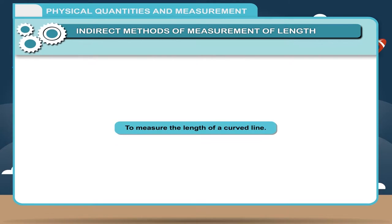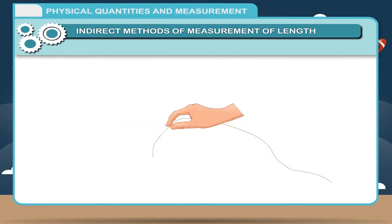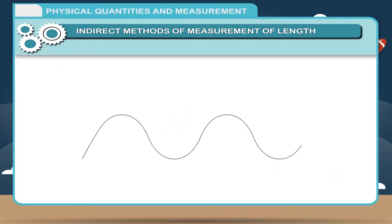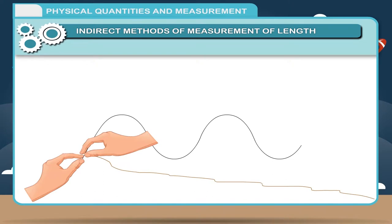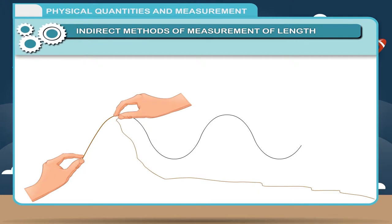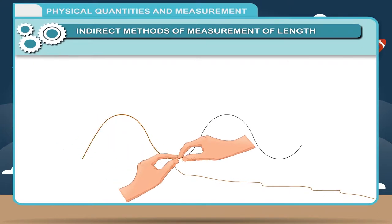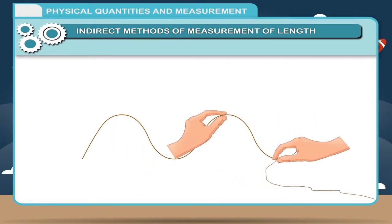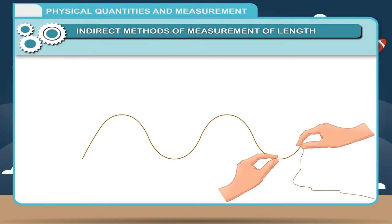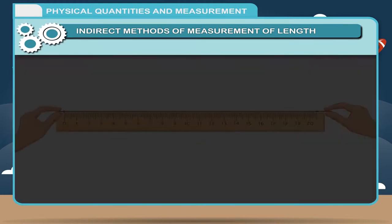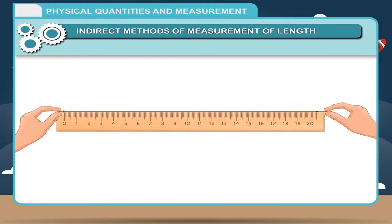Activity: To measure the length of a curved line, take a thread and tie a knot on its one end. Place the knot of the thread at one end of the curved line, then move the thread along the length of the curved line carefully. Hold the thread at small distances between your thumb and first finger, continuing till you reach the other end. Using a ball pen, put a mark on the thread where it just touches the last point on the line. Now stretch the thread along a meter scale and measure the length from the knot to the ink mark — this gives the length of the curved line.